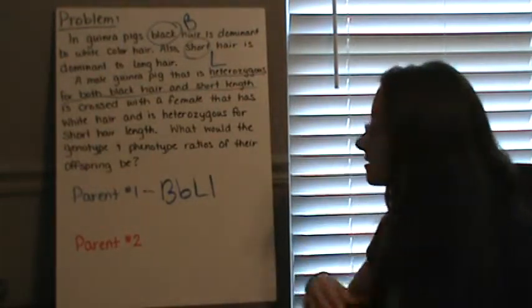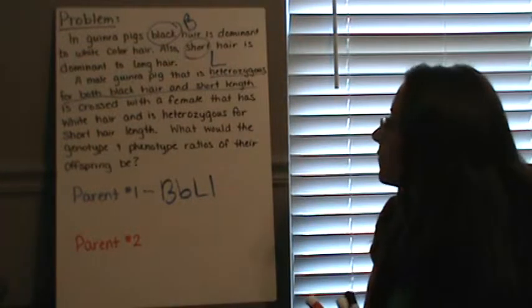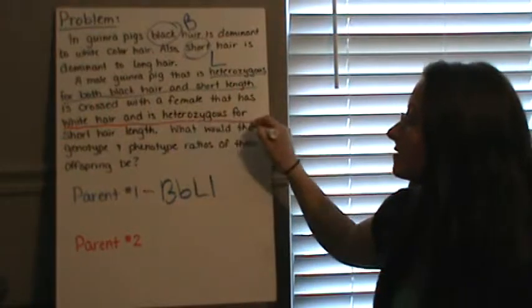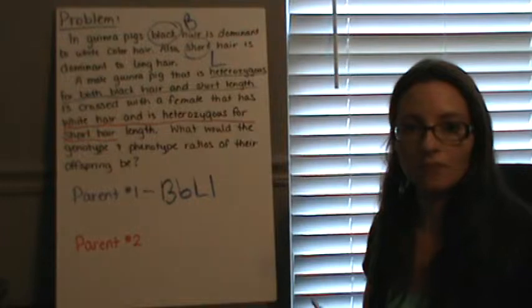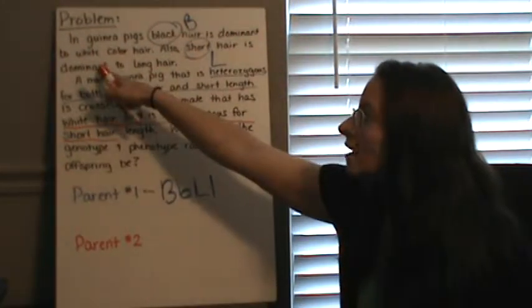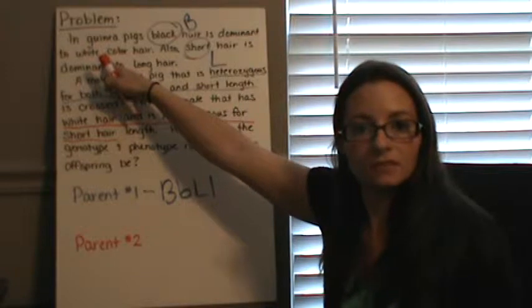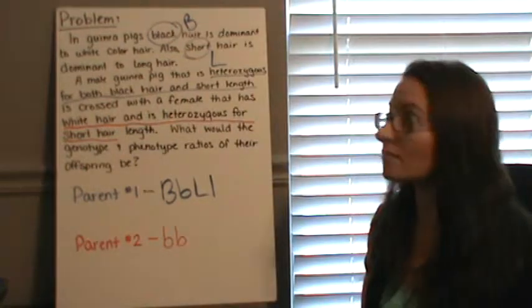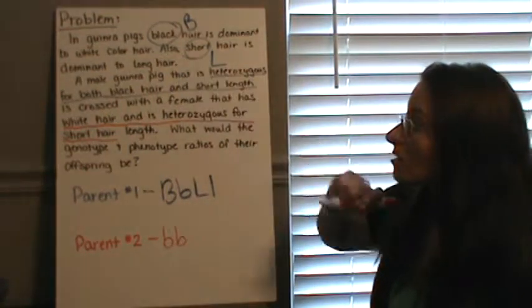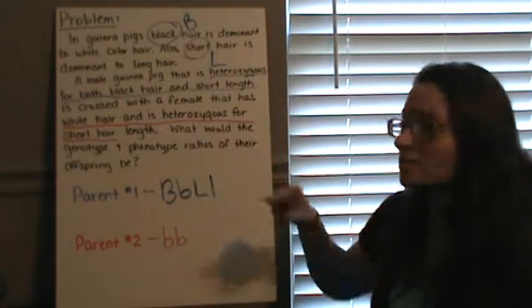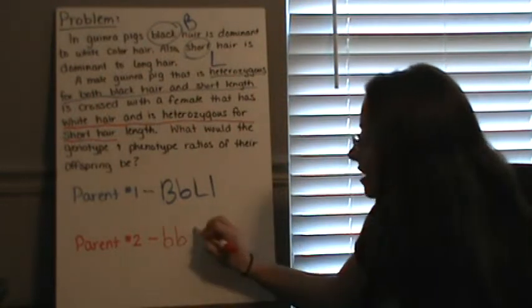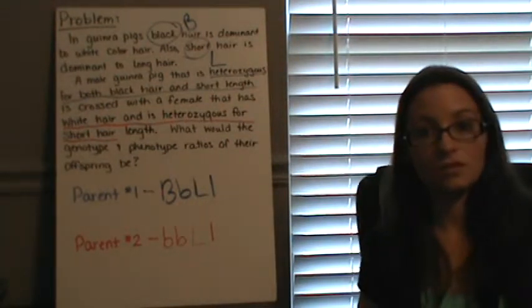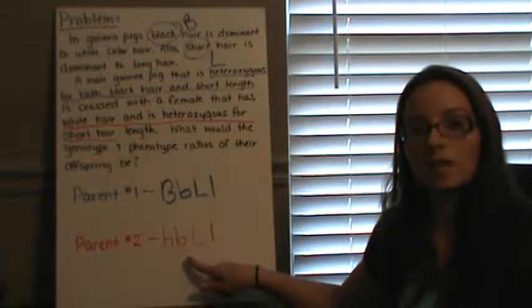Parent number two is a female that has white hair and is heterozygous for short hair. If she has white hair, white is recessive, so it has to be two recessive alleles — little b, little b. For hair length, she is heterozygous for short hair, meaning she has to have the two different alleles. So her genotype is little b, little b, big L, little l — bbLl.